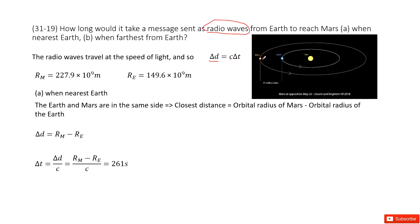So in this one, the closest distance is the orbital radius of Mars minus the orbital radius of Earth. We use this: delta d equals R_M minus R_E.